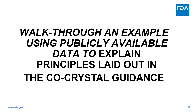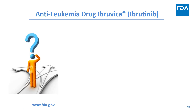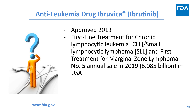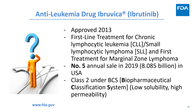From this slide on, we will walk you through an example using publicly available data to explain the principles laid out in the co-crystal guidance. Anti-leukemia drug Ibrutinib was approved in 2013. It is a first-line treatment for chronic lymphocytic leukemia, CLL, small lymphocytic lymphoma, SLL, and first treatment for marginal zone lymphoma. It ranked number five in annual sales in 2019 with more than $8 billion in sales in the USA alone. Drug substance Ibrutinib is Class II under the BCS biopharmaceutical classification system, with low solubility and high permeability.